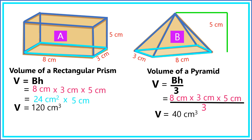As you can see, 40 cubic centimeters is one-third of 120 cubic centimeters. Therefore, the volume of a pyramid is one-third the volume of a rectangular prism.